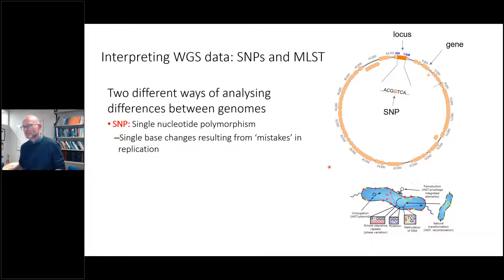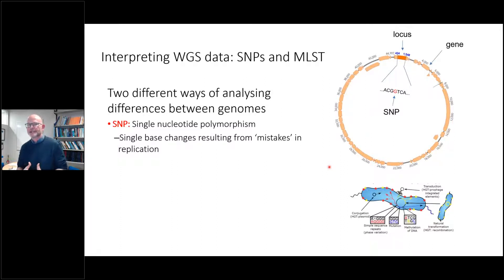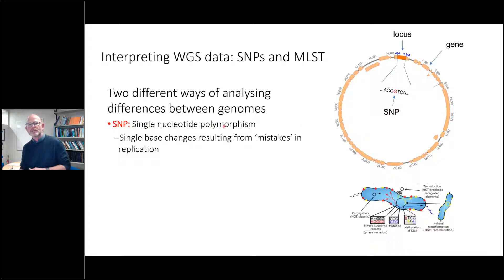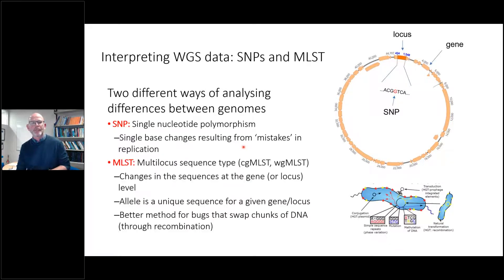I'm going to talk about how we interpret whole genome sequence data, focusing on two most prominent approaches. One is SNP — single nucleotide polymorphism analysis — and the other is multi-locus sequence typing, or allele-based analyses. The genome has genes around the outside, referred to as loci. Within the sequence, you may have differences — these are your SNPs, or single nucleotide changes or polymorphisms. SNPs result from mistakes in replication, enabling you to look at similarities and dissimilarities between isolates that may or may not be epidemiologically linked.